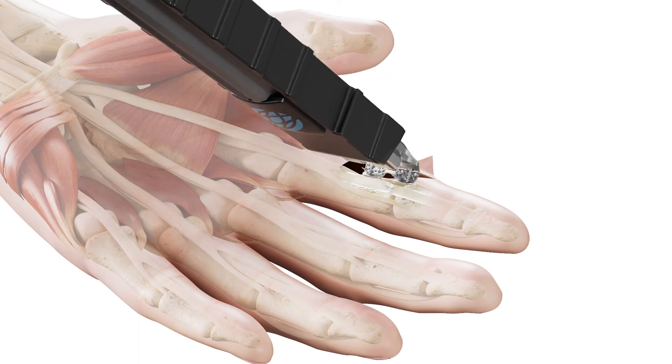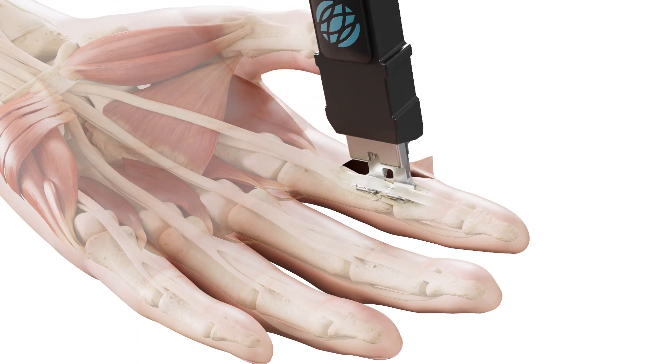Position the tendon in the cradle and fully engage the tendon by rotating the thumbwheel in a clockwise direction until the aforementioned click occurs. At this point, observe the tendon through the viewing windows to ensure proper tendon coaptation and centering in the cradle.